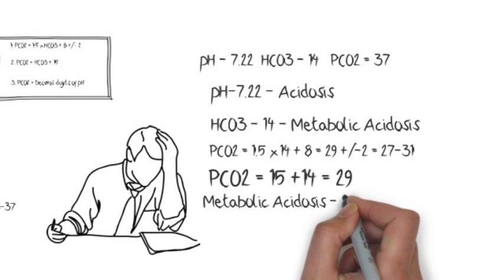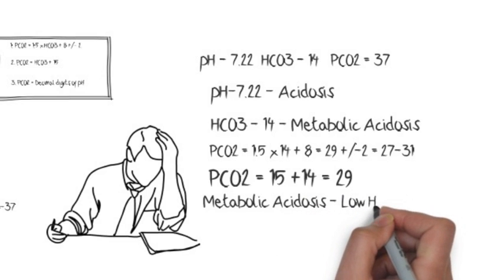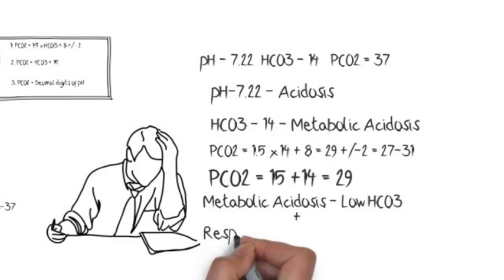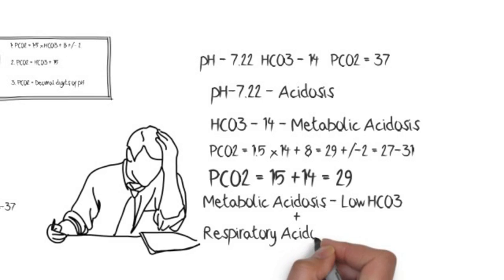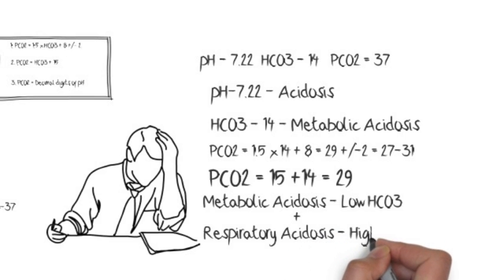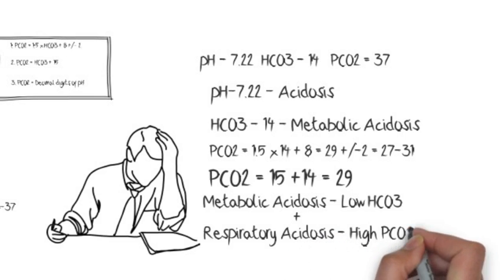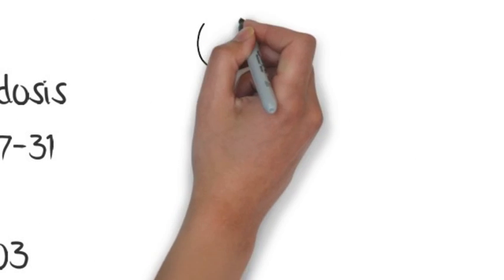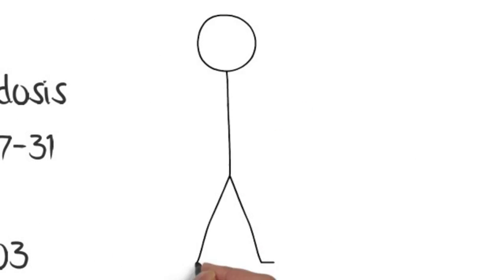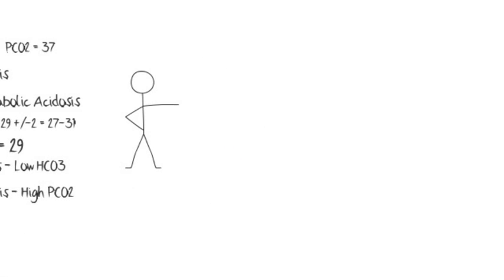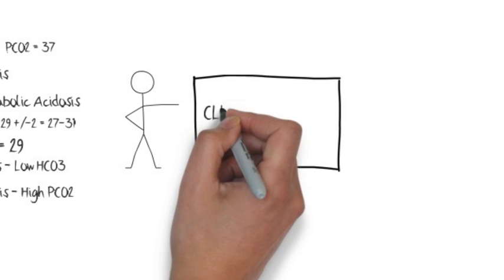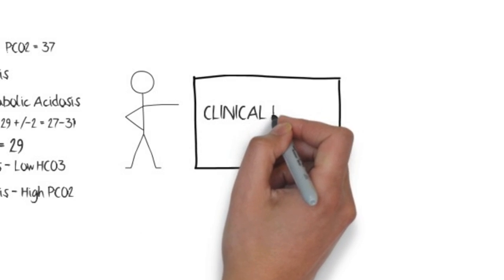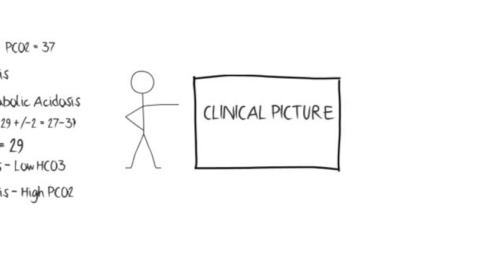So there are two processes going on here: one is metabolic acidosis, which is low bicarb, and the other is respiratory acidosis, reflected by the inappropriately elevated pCO2. It is always important to consider the clinical picture when evaluating any ABG disorder.